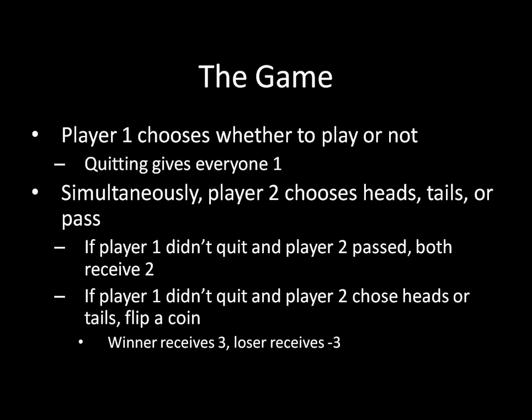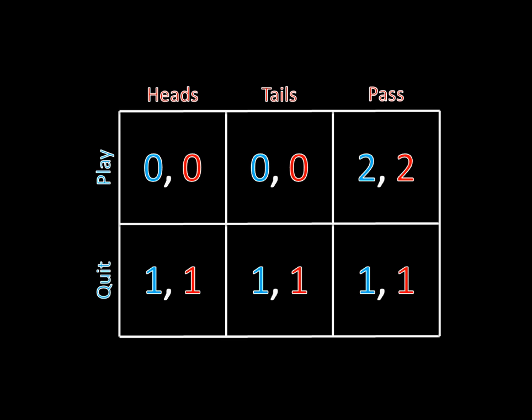You should notice that if they play the game and player 2 chooses heads or tails, the expected value for both players is 0. Because half of the time the individual is going to win and half of the time they're going to lose — so 3 and negative 3 averages out to 0. So the game matrix shows: if player 1 quits, flat 1 for everyone; if player 1 plays and player 2 passes, both get 2; and the expected value for play heads or play tails is 0 across the board. We can solve this with Nash Equilibrium because no player has informational knowledge the other doesn't have, since the coin is flipped afterwards.